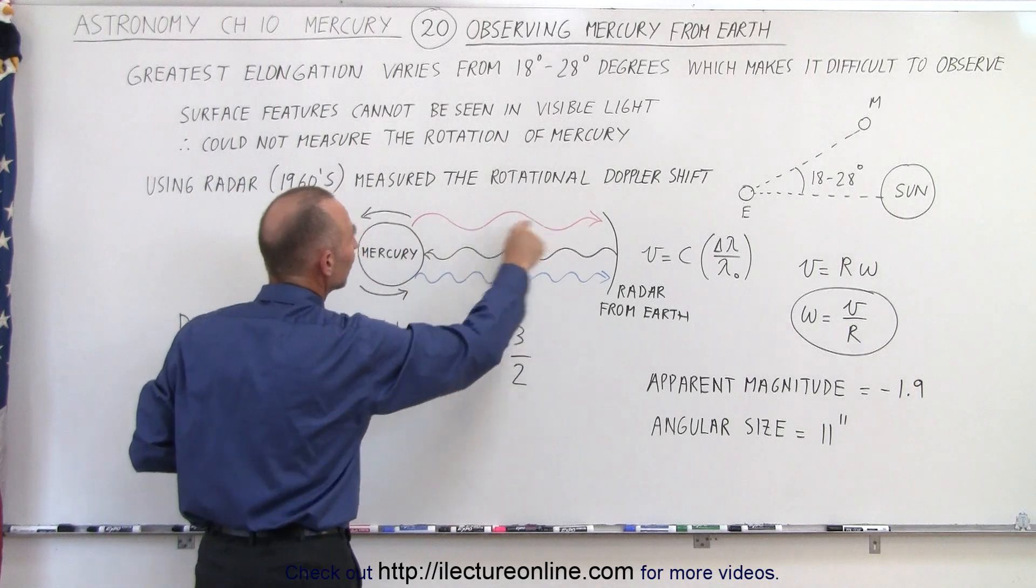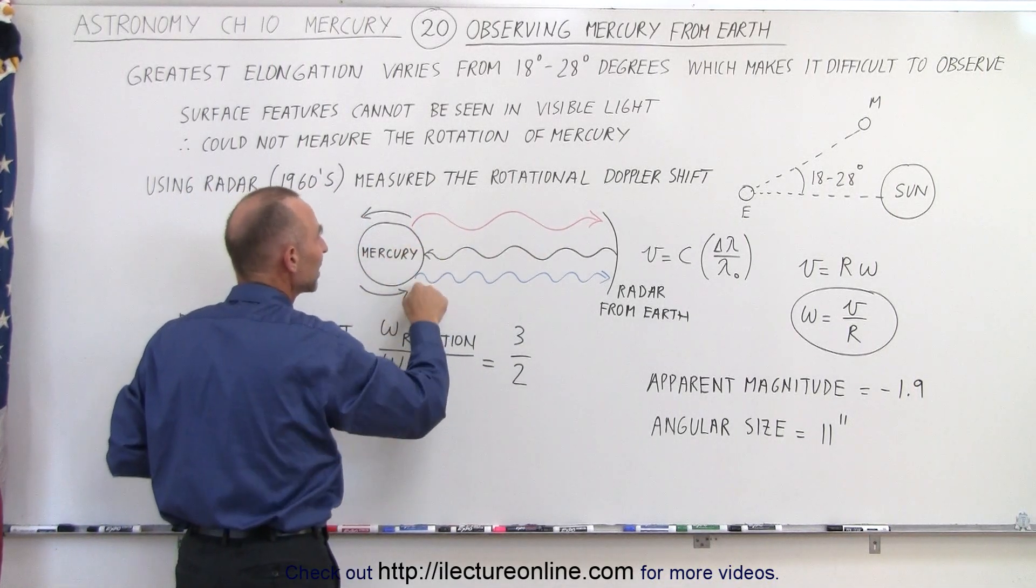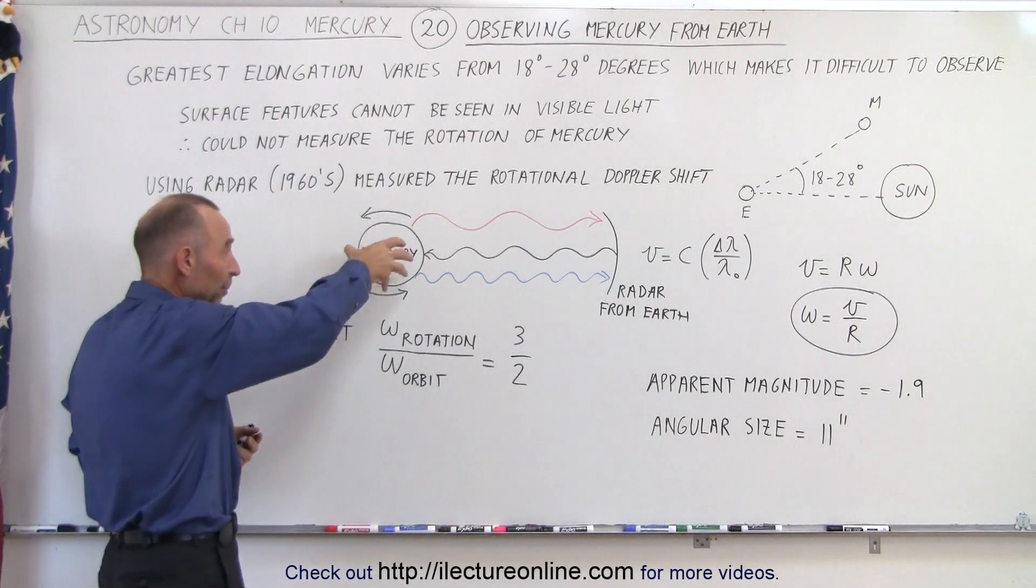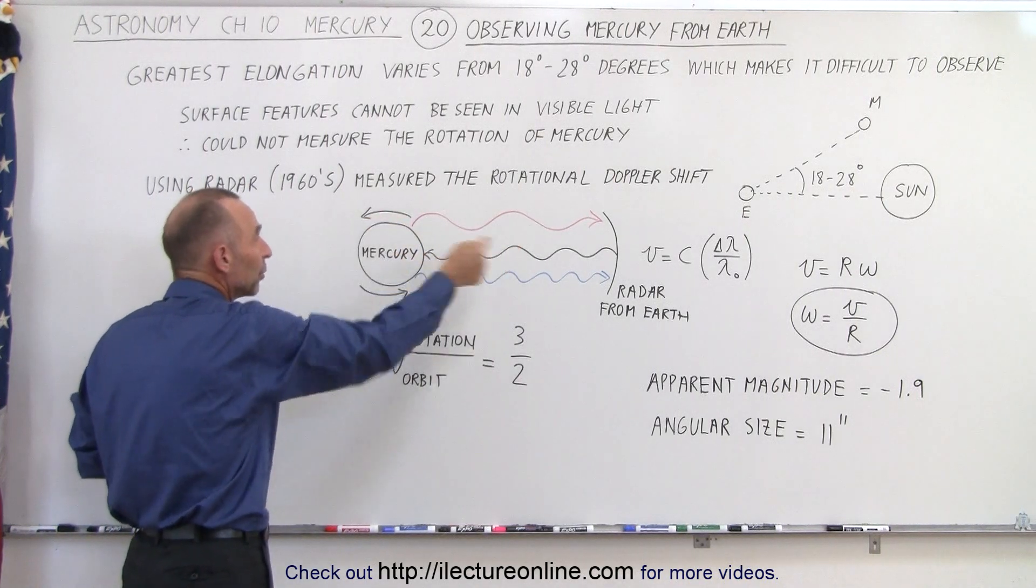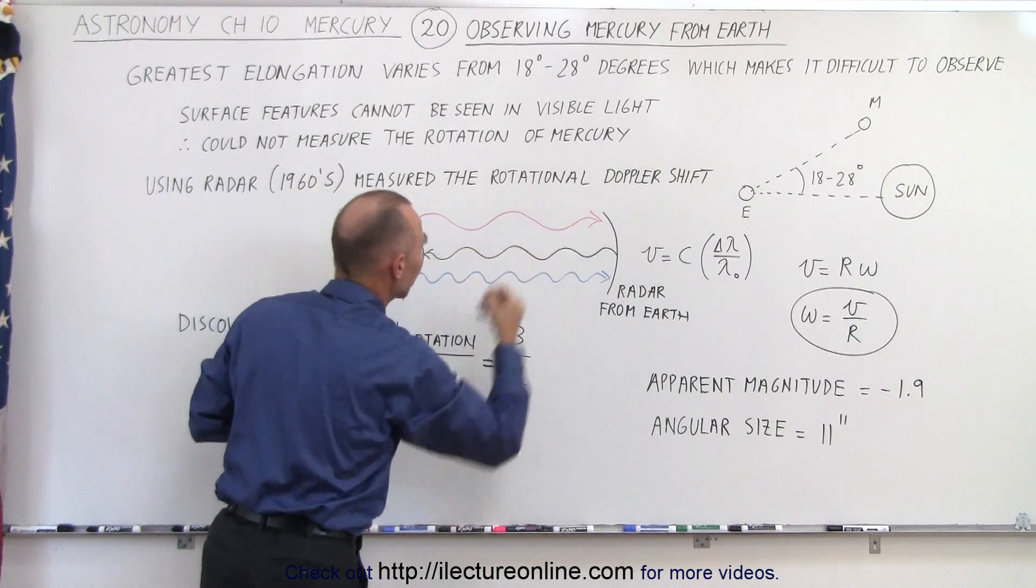the beams being sent back, reflected back from the surface, will have a different frequency and a different wavelength depending upon which side of the surface were hit. If the planet is rotating like this, since the surface is moving away from the Earth, then the wavelength will be elongated, meaning they will be red-shifted.